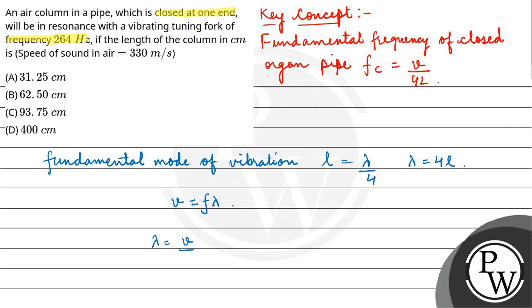So wavelength will be velocity upon frequency. Velocity is 330 and frequency is 264.